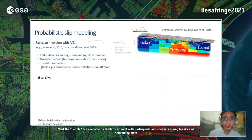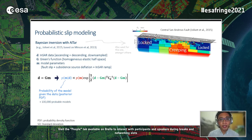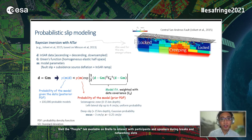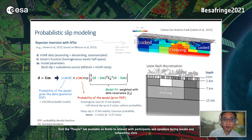To model slip on the fault from the INSAR data, we follow a Bayesian approach. This turns the linear problem D equals GM — where M are our unknowns, the model parameters — into an exploration of the solution space that gives a distribution of probable models given the data, defined by a posterior probability density function (PDF), based on prior knowledge of the fault kinematics such as the fault being a left-lateral strike-slip fault. What's fixed are the geometries of the subsidence source and the discretized vertical fault, with smaller patches towards the surface, assuming a homogeneous elastic half-space.